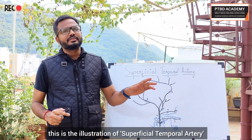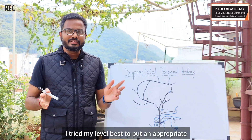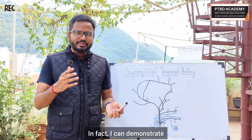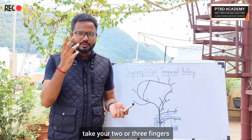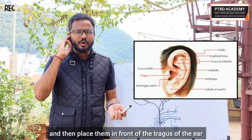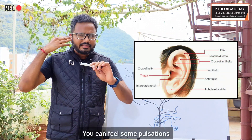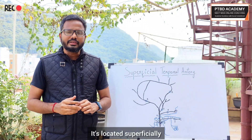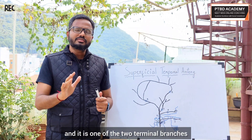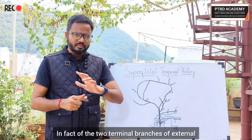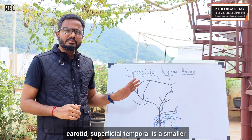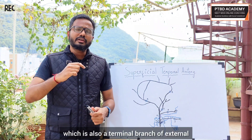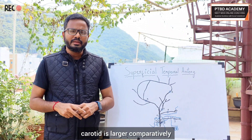As you can see, this is the illustration of the superficial temporal artery. As the name itself indicates, it's present superficially. In fact, you can demonstrate that right now — take two or three fingers and place them in front of the tragus of the ear and you can feel some pulsations. These pulsations are from the superficial temporal artery. It is one of the two terminal branches of the external carotid artery.